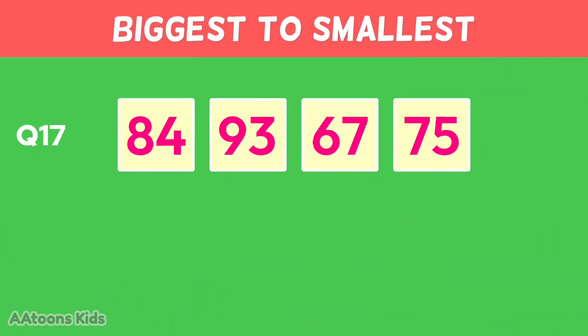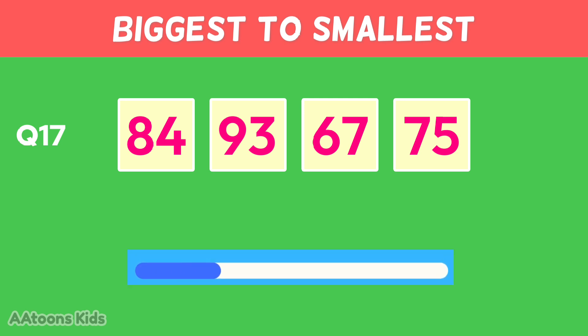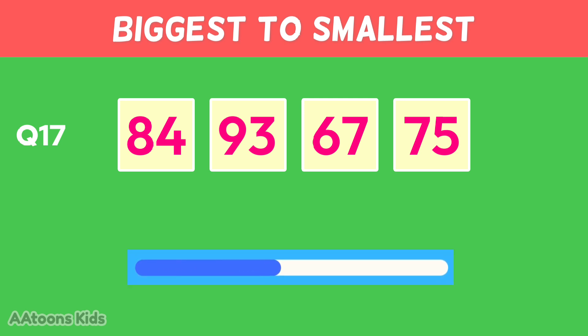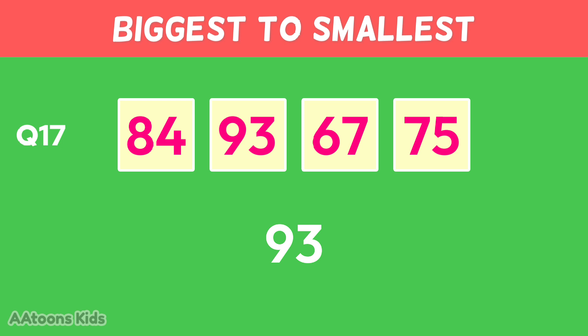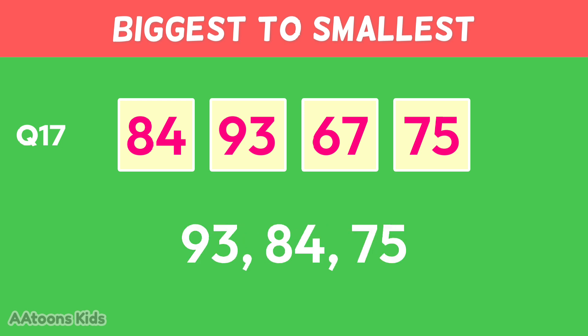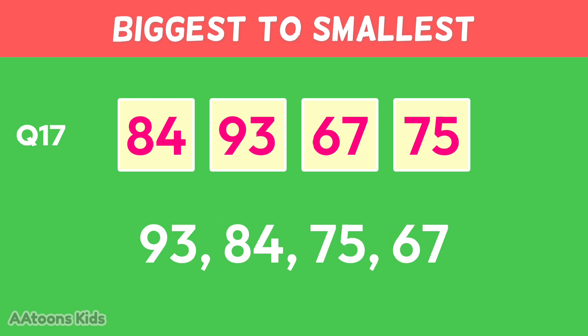Arrange these numbers from biggest to smallest: ninety-three, eighty-four, seventy-five, sixty-seven.